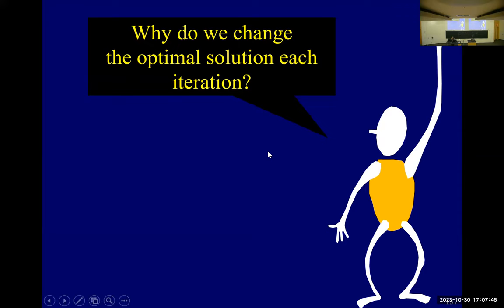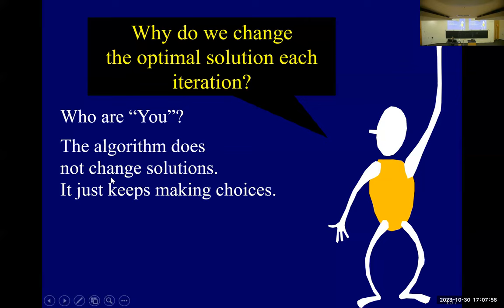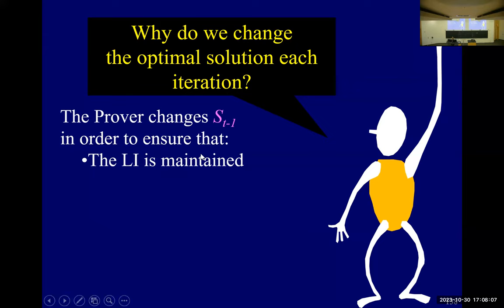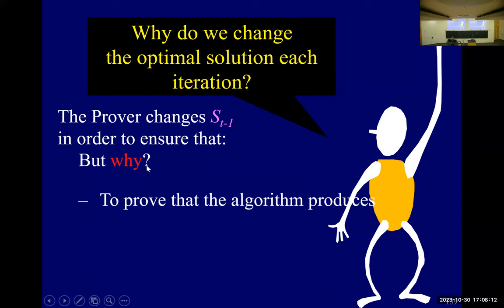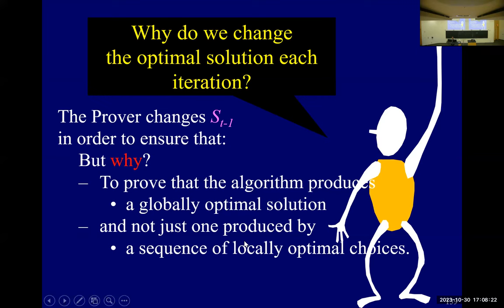Why do we change the solution each iteration? First, who is 'we'? The algorithm doesn't do it. The prover changes it in order to ensure that the loop invariant is maintained. The last bridge hasn't been built: to prove that the algorithm produces a globally optimal solution, if you make a bunch of local decisions, it doesn't necessarily do the trick. These algorithms I'm giving are the classics — if you go anywhere in the world and take third-year algorithms, you're going to do greedy algorithms and minimal spanning tree.